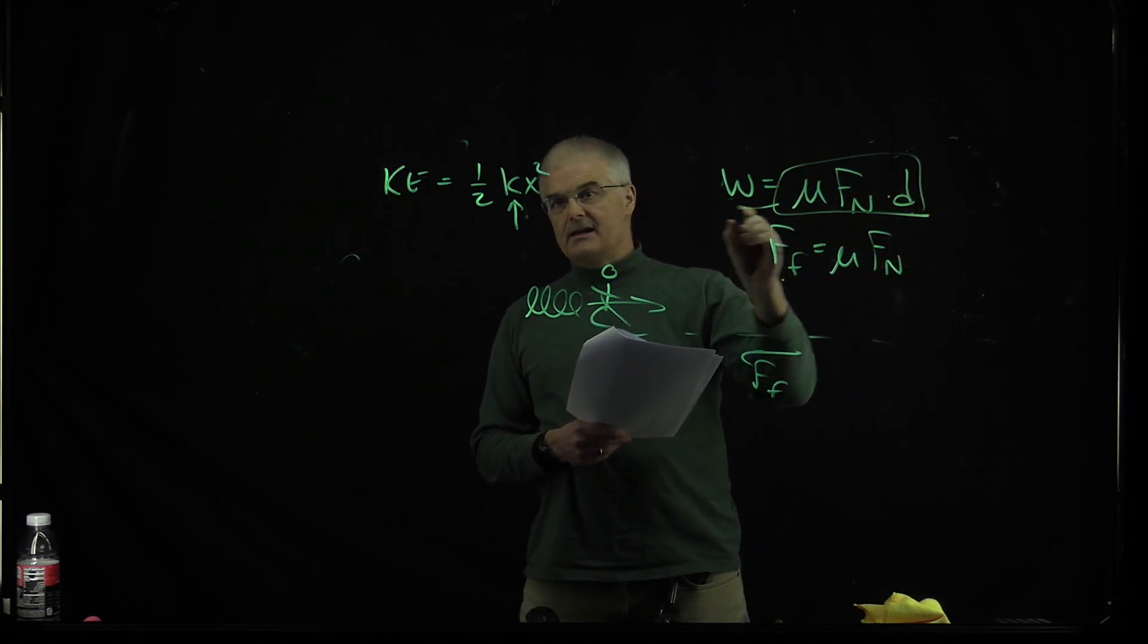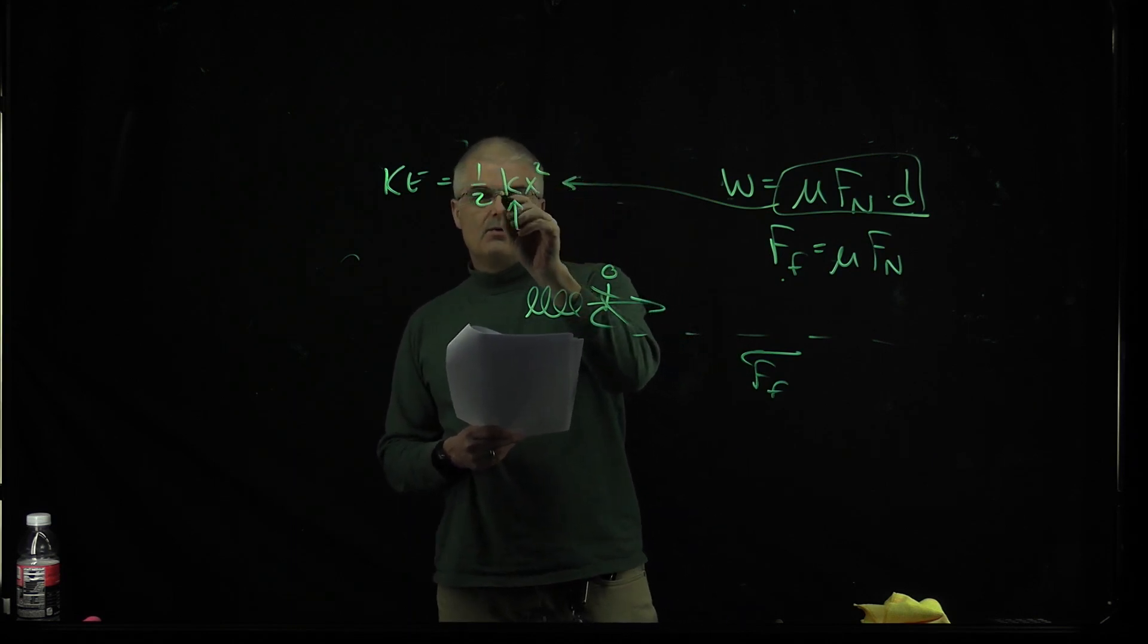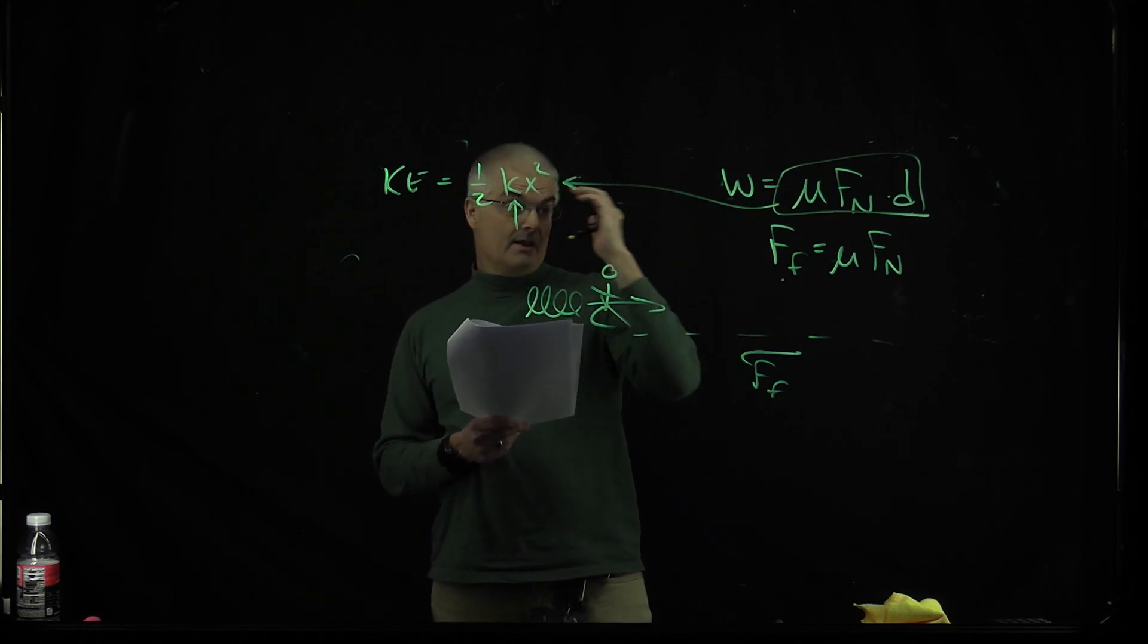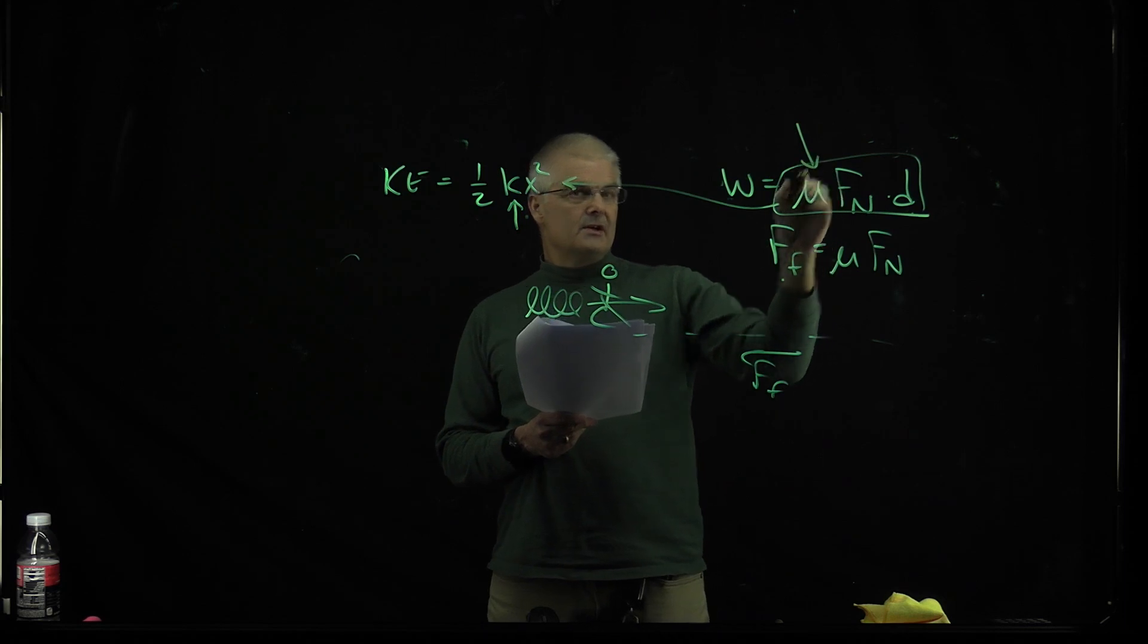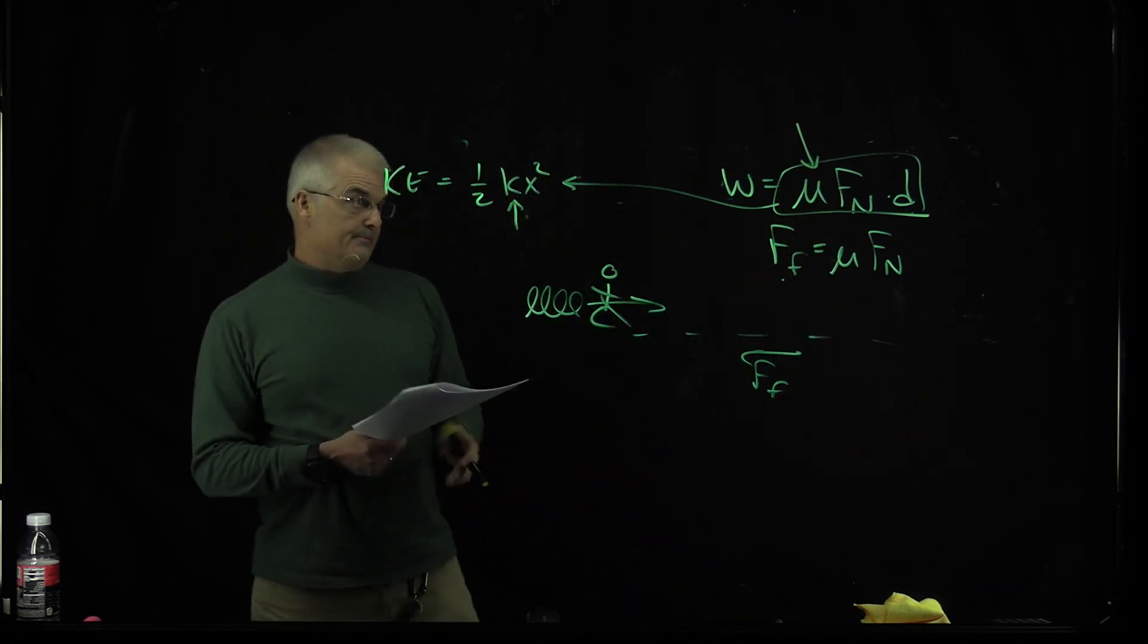And then you're going to set that equal to this - one-half kx squared - and you're trying to solve for mu, and that's how you solve this problem. Thank you.